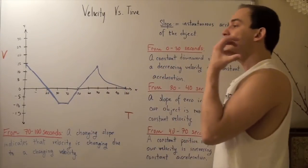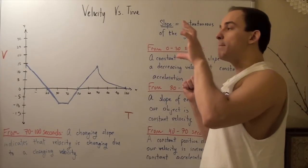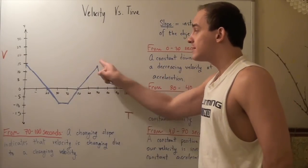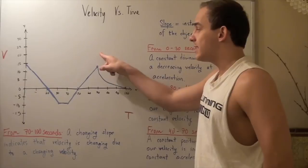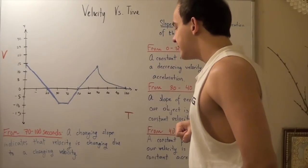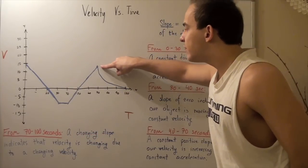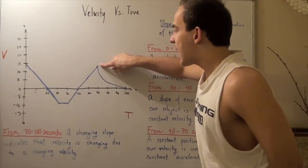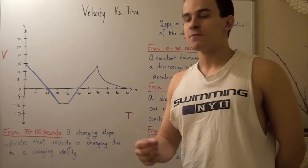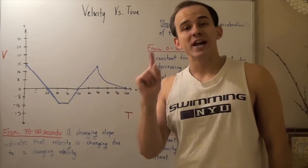The object stops, reverses direction, and begins moving in the positive direction. Its velocity becomes positive and it is accelerating in the same direction as it's moving at a constant positive acceleration, so velocity is changing uniformly. When we get to time equals 70 seconds, the slope begins changing, and from 70 seconds to 100 seconds we have a changing slope, meaning our acceleration is no longer constant.